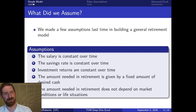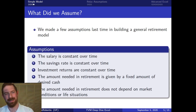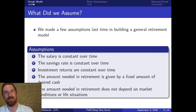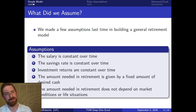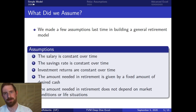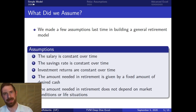We see a few assumptions here on the slide. First, the salary is constant over time — that's definitely not a very realistic assumption. As you go through your career, you'll get promotions and switch jobs, which will increase your wage. People typically earn higher salaries later in their career, so having one constant salary doesn't capture that very well. Second, the savings rate — we had a single consistent savings rate in the original model, but the savings rate will also change over time. If you're bringing more money in, you'll likely be able to save a larger percentage.